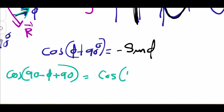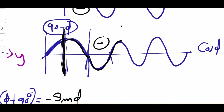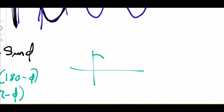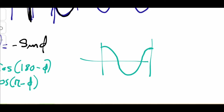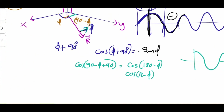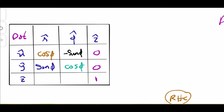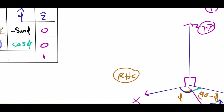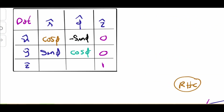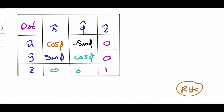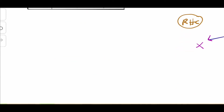So ŷ·φ̂ equals cos(180 − phi) which equals cos(phi) — the cosine function shifted by pi gives a negative sign, but here the resulting shift still yields cos(phi). For ẑ components: ẑ is perpendicular to both r̂ and φ̂, so cos(90) equals zero for those entries. That completes our dot product table.